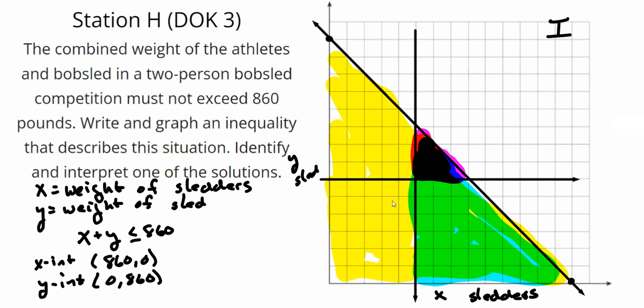So as you're doing the packet of problems, what you want to be doing is following the instructions, which are going to ask you to write the inequality in two variables that represents the situation, graph it, and then identify any possible constraints that might affect the solution region.